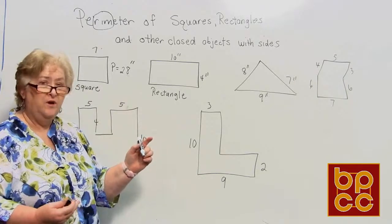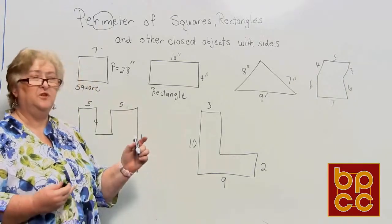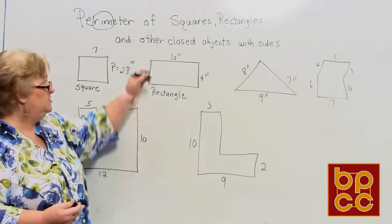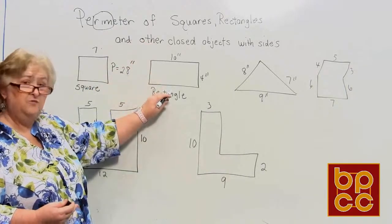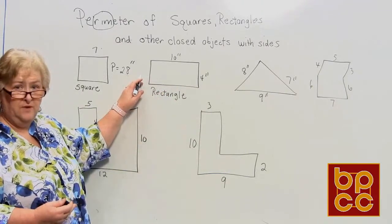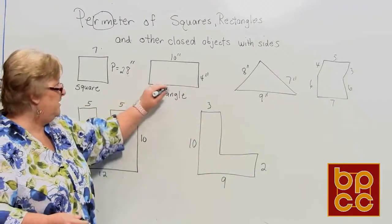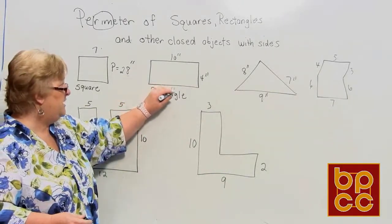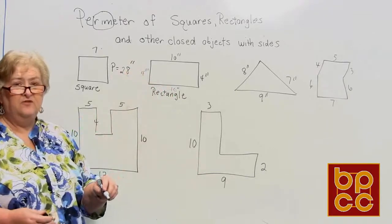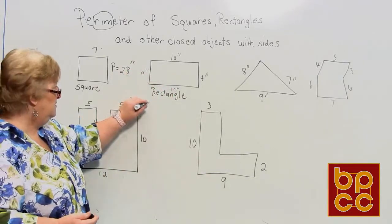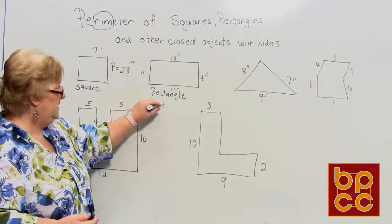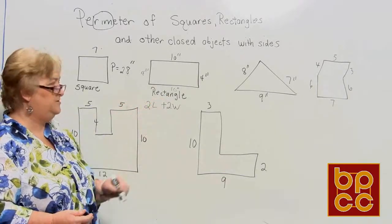Now let's go to a rectangle. We don't have to identify all sides because opposite sides are the same length. If this side is 10 inches, the opposite is also 10; if this side is four inches, the other is four. We can go ahead and label them so all numbers are in front of you.